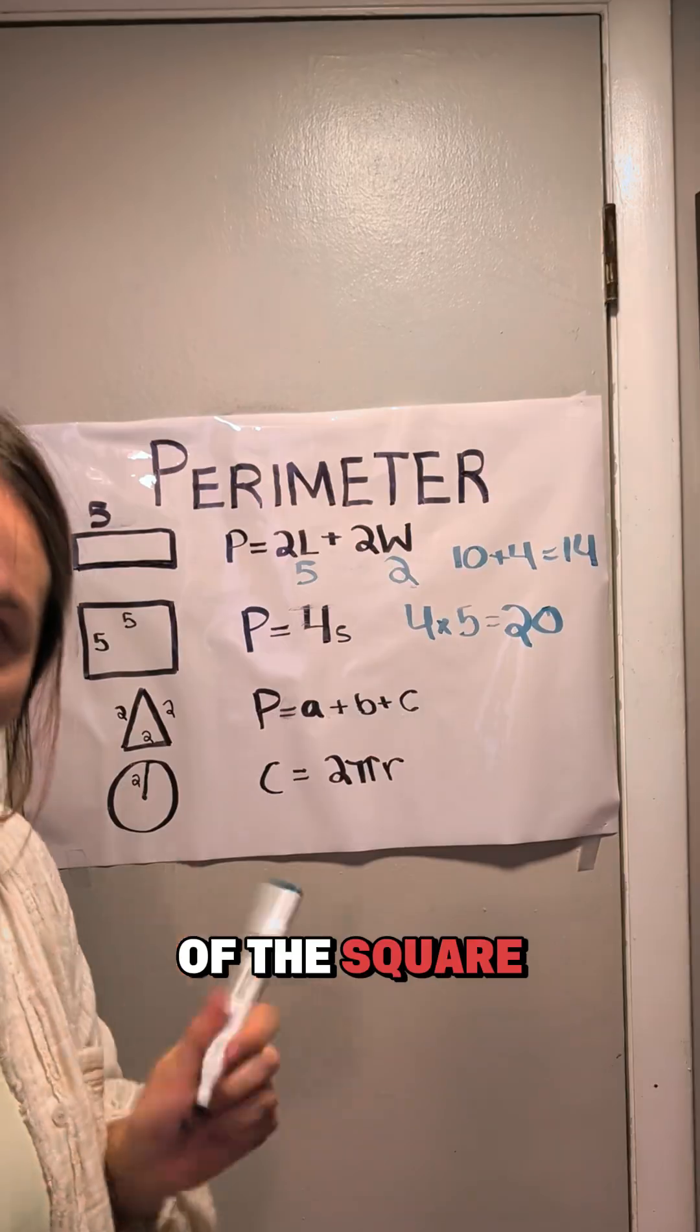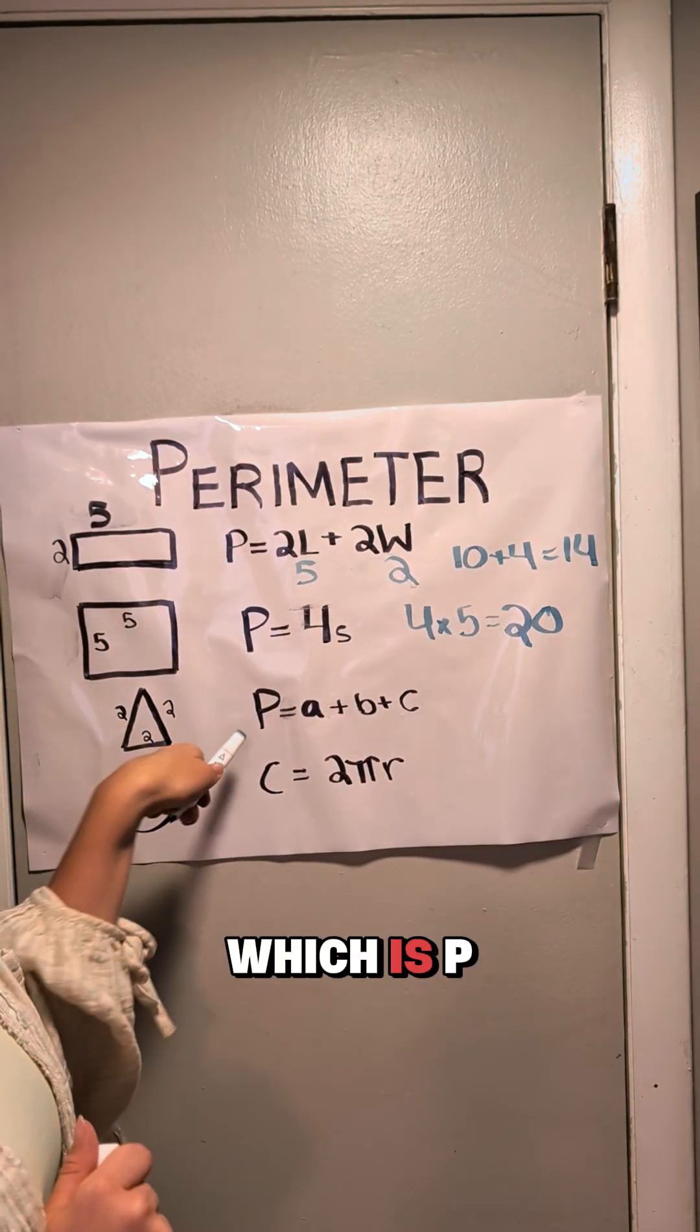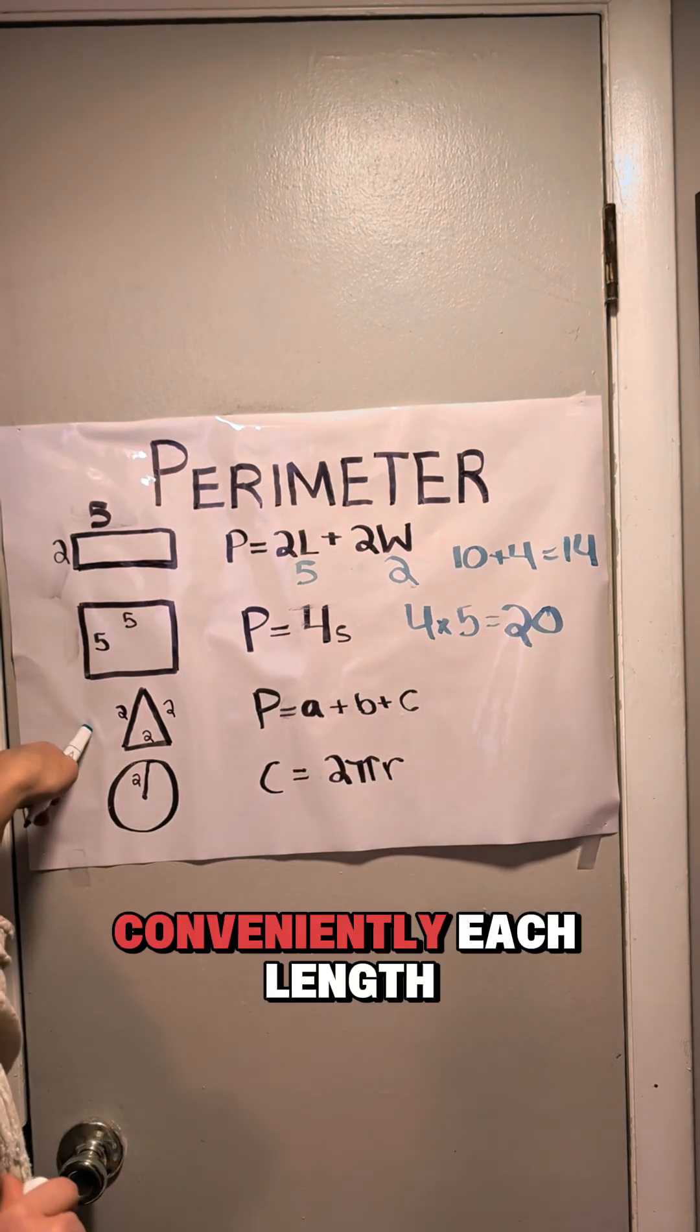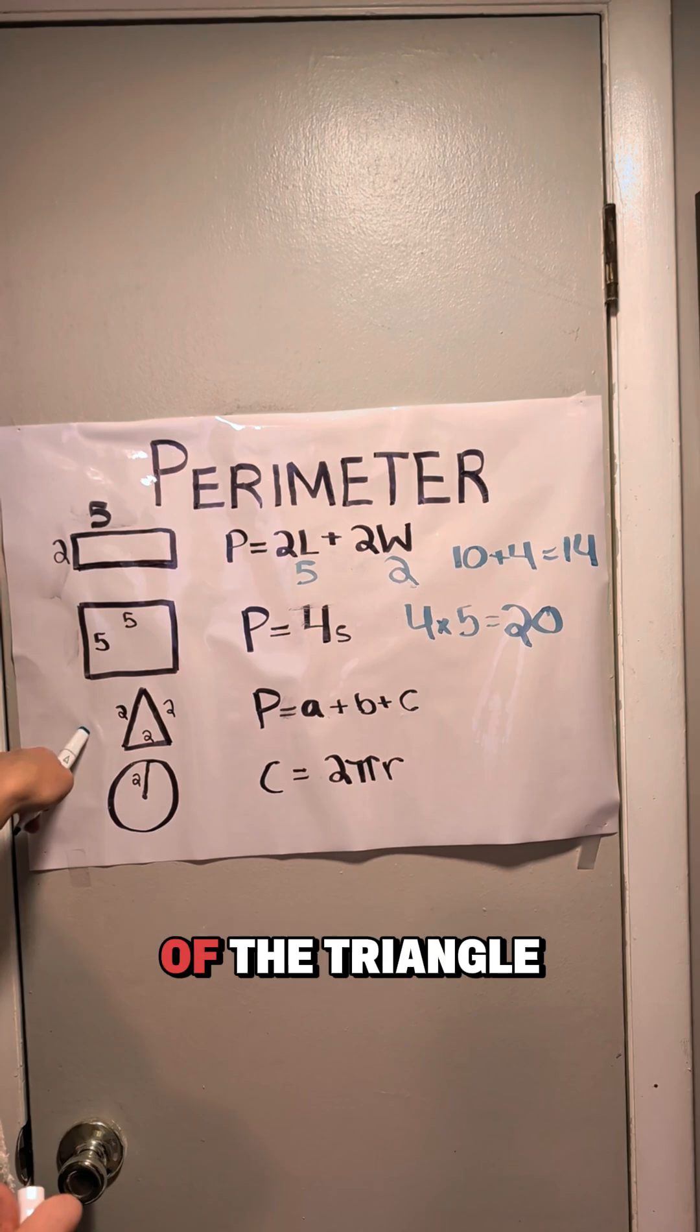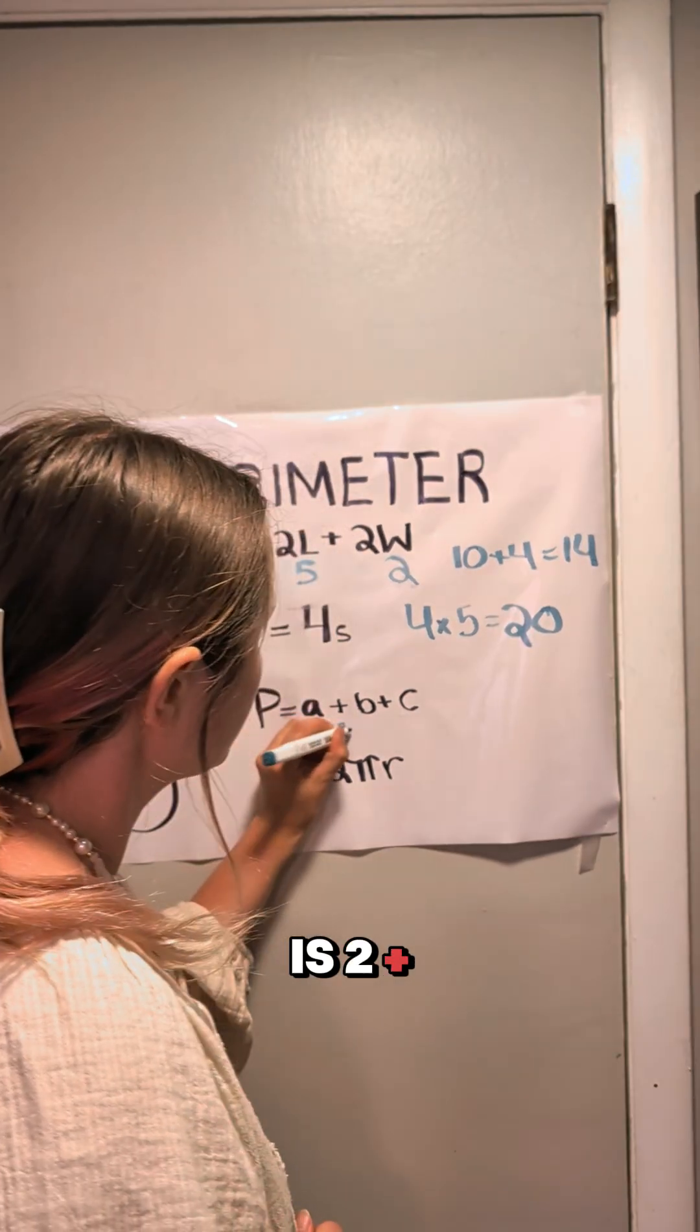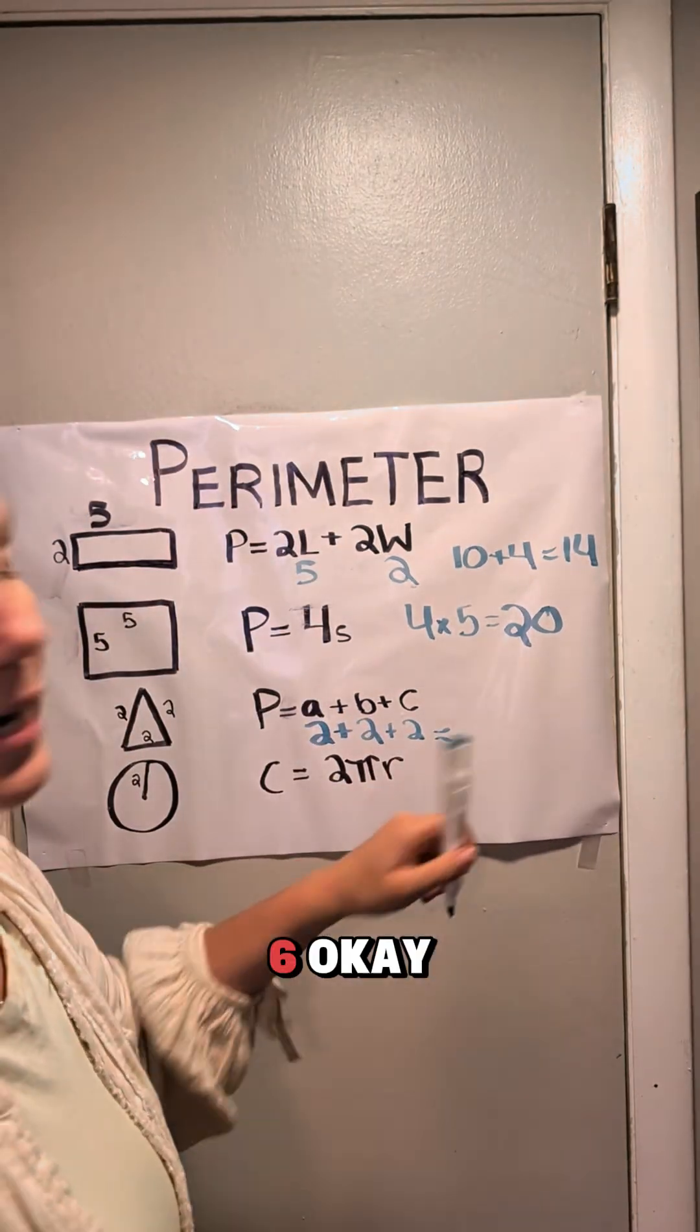That is the perimeter of the square. Now we're going to go on to the triangle, which is P equals A plus B plus C. Conveniently, each length of the triangle is 2. So all we're going to do is 2 plus 2 plus 2 equals 2, 4, 6.